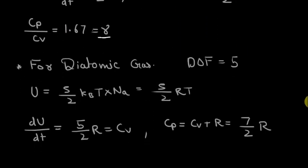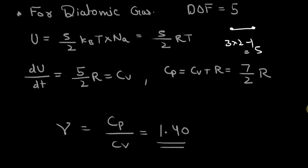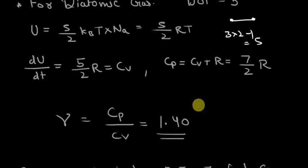Now for a diatomic gas we know that the degrees of freedom are 5 because it's a dumbbell shaped gas and we have seen that 3 into 2 minus 1 is equal to 5 so 5 degrees of freedom. Now just plug that in here we will get 5 by 2 RT derivative it with respect to T and we will get 5 by 2 R from that we can get Cp which is 7 by 2 R and from that we can get gamma which is 1.40. So for a monoatomic and diatomic gas we got Cv, Cp and also gamma.